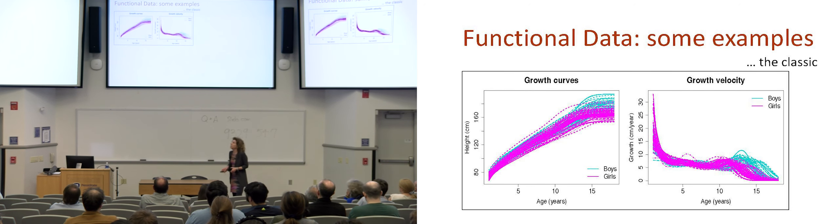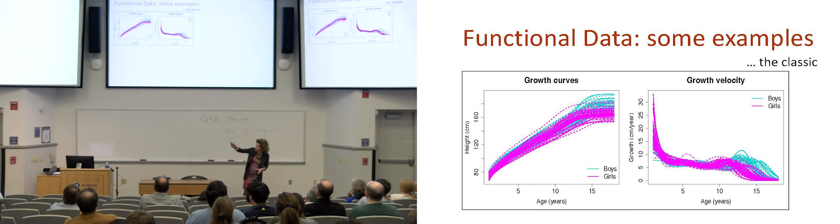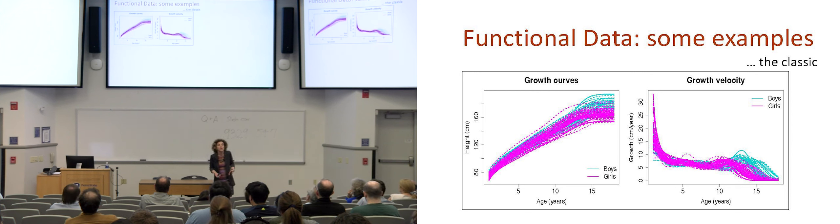So, the first example I'm putting up, it's a classic. These are growth curves. And this is a very famous data set called the Berkeley data set. On the left, you see the growth curves themselves. And right next to them, you see their derivatives. One of the reasons why functional data is very interesting and useful is because it allows us to use the concept of derivative, of velocity.